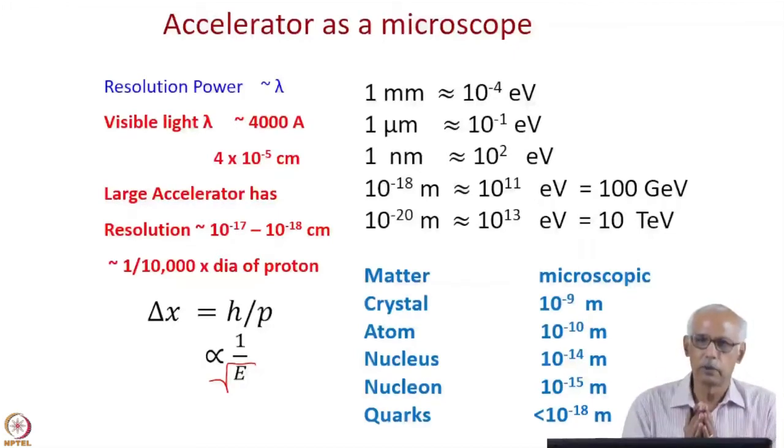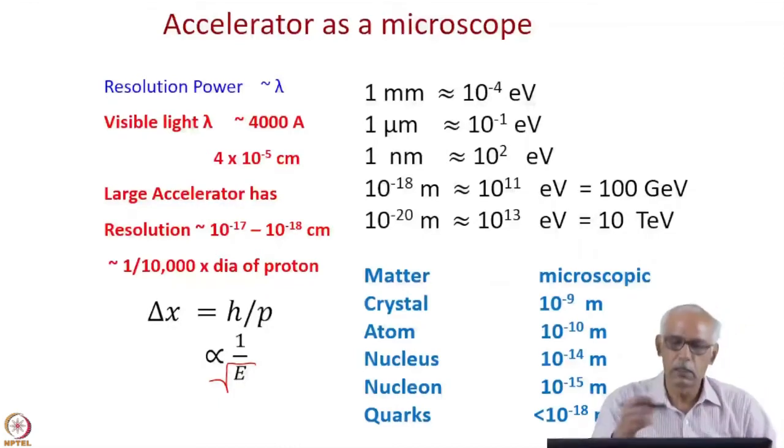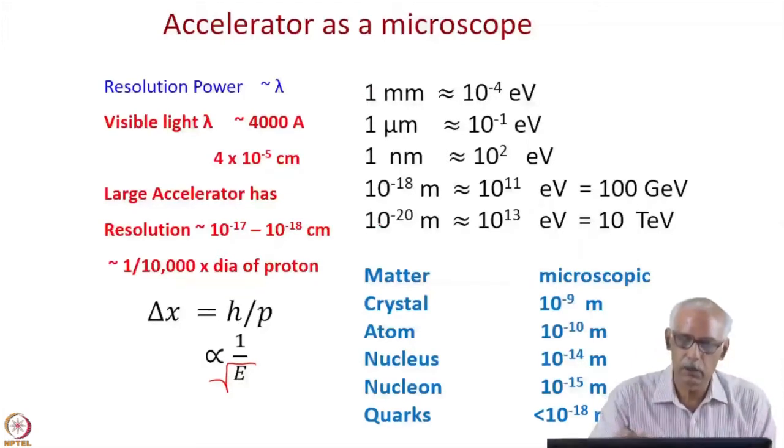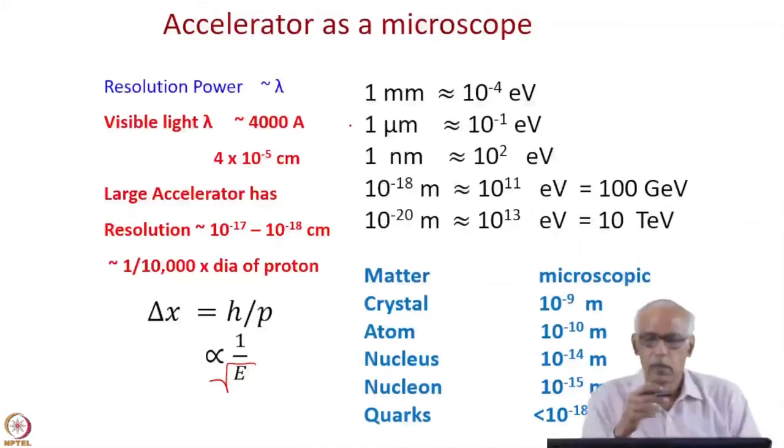For example, these are some of the things which are given here. If you want to study 1 millimeter kind of things then you need an energy, kinetic energy of the particle which is of the order of 10 to the power minus 4 electron volts. That is good enough.